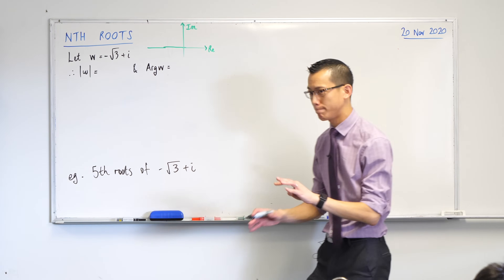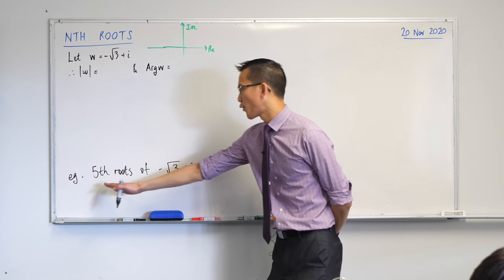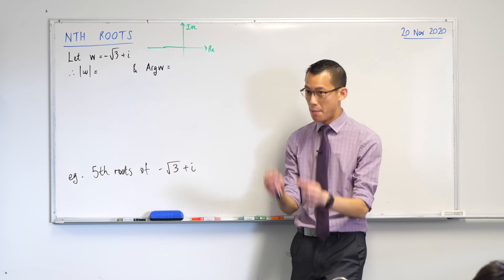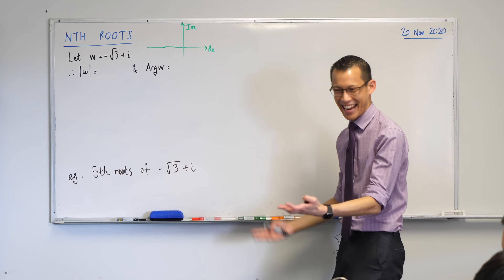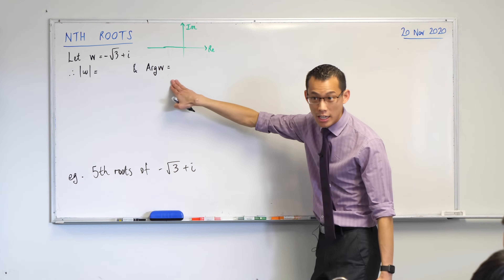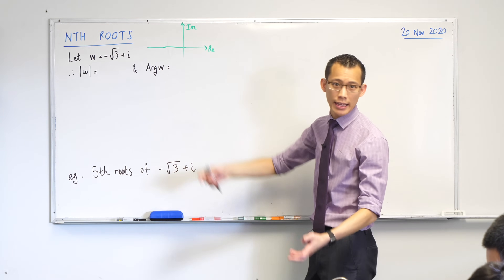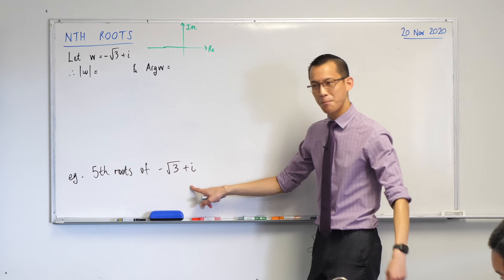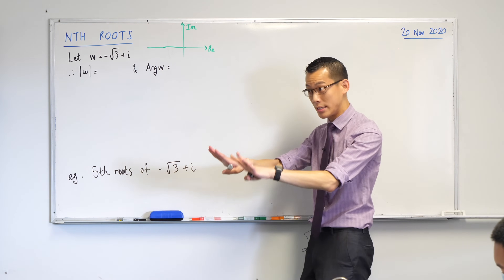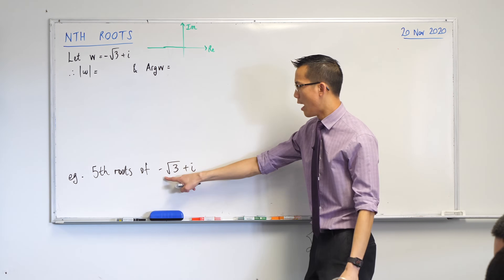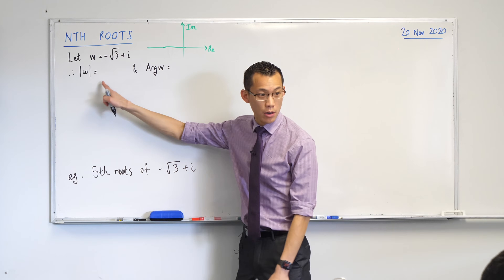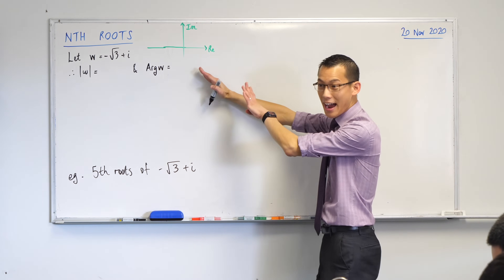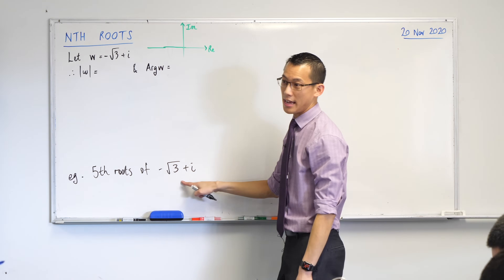For those of you who aren't 100% confident, let me give you a nudge. We're looking at the fifth roots of negative root 3 plus i, which is given in rectangular form. But rectangular form isn't great for finding nth roots, so the first thing I'm going to do is work out the modulus and argument, and then go into exponential form. Do yourself a favor and draw a tiny Argand diagram.